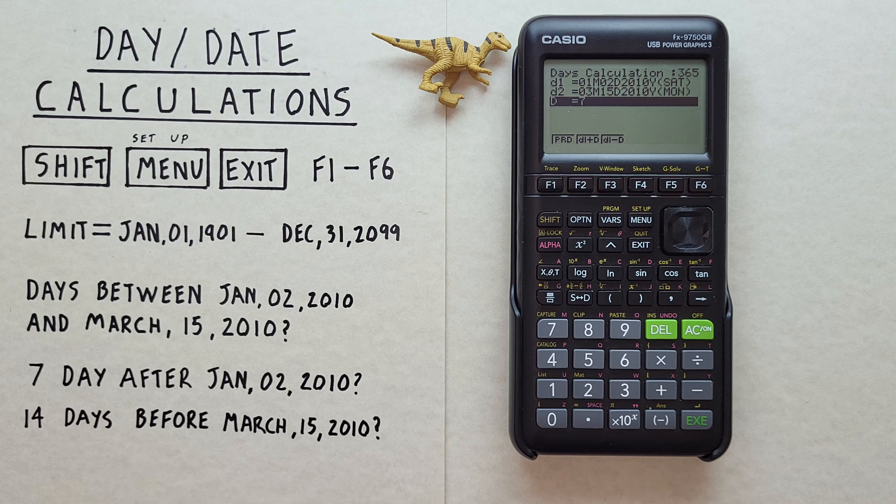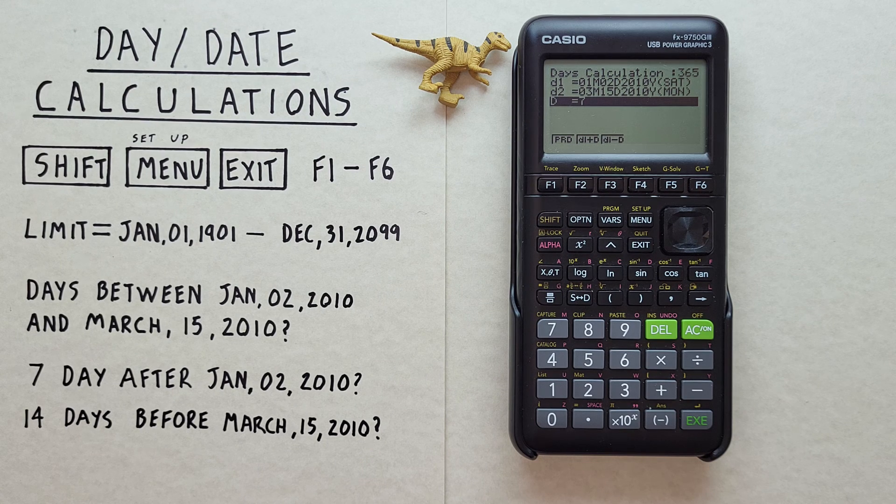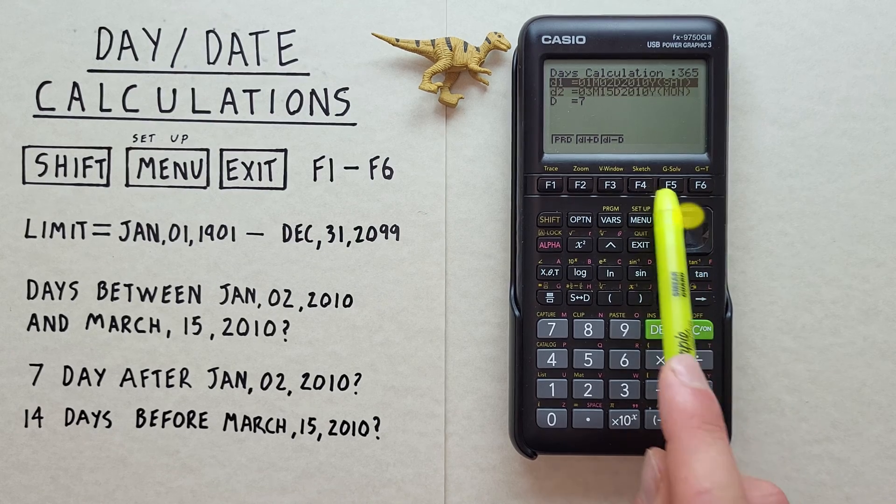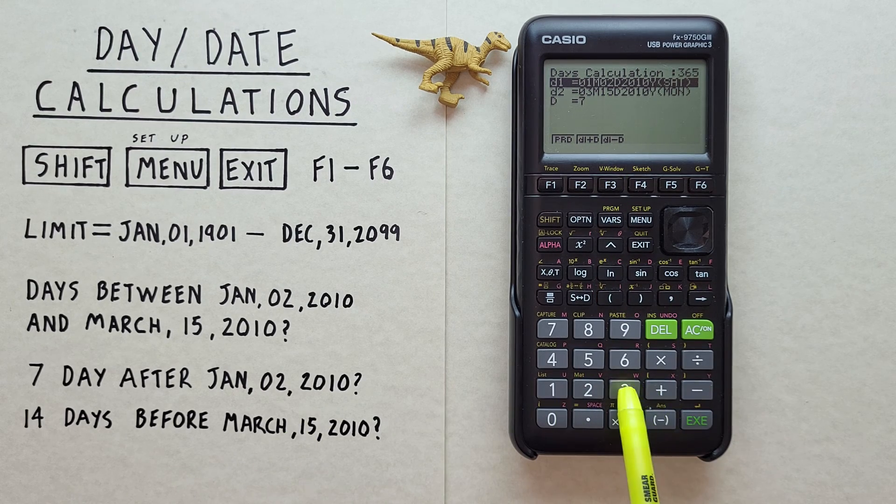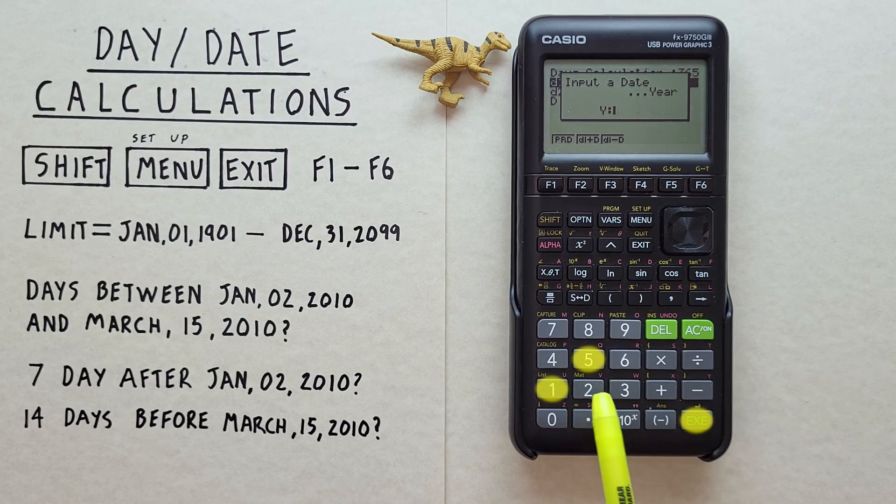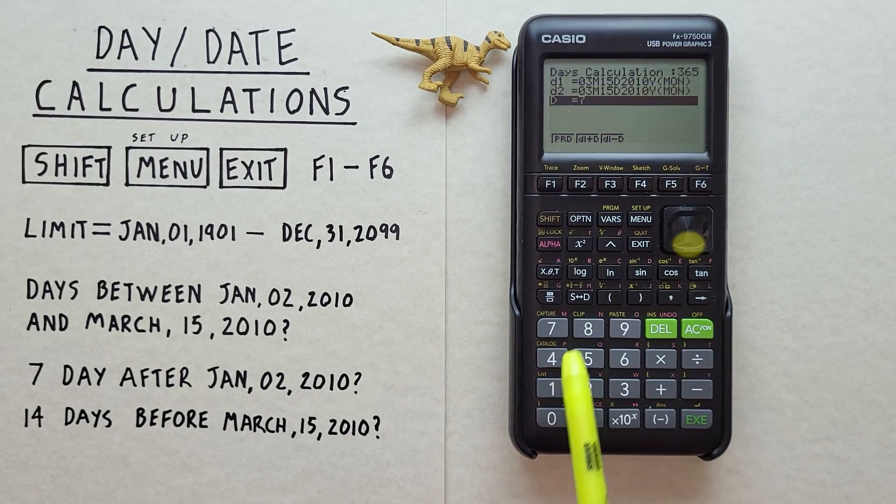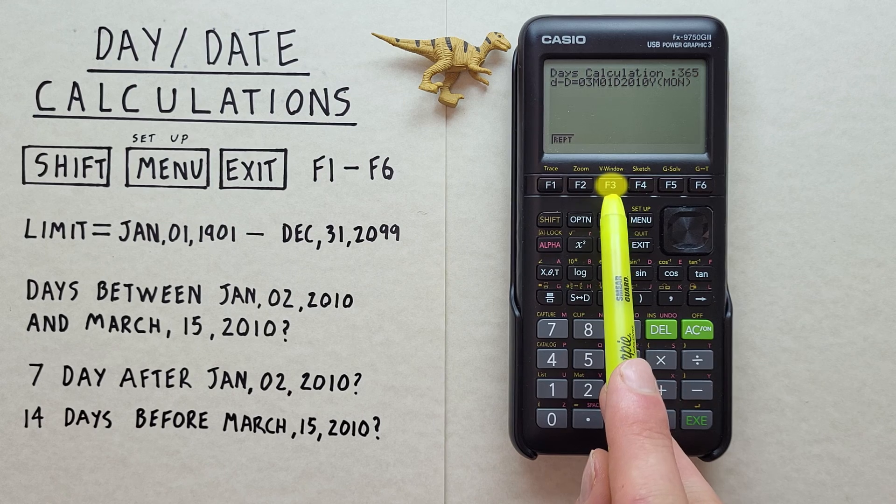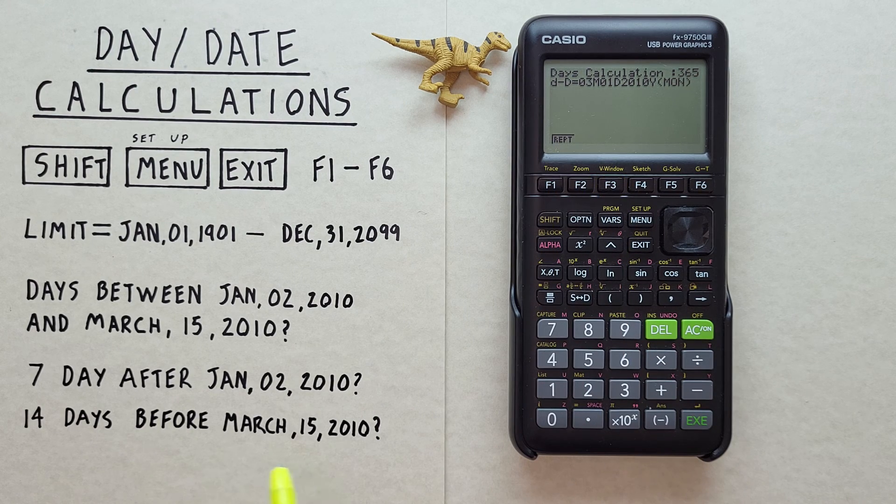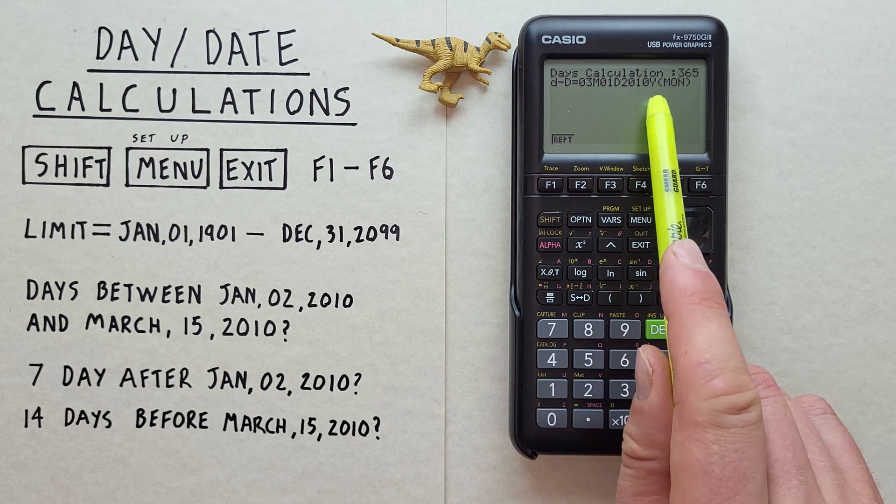We can also calculate days before a date. Like for example, we had another milestone that we wanted to have done 14 days before March 15. How can we determine that? Well, we need to first change our D1 because these only work off of D1. So we need to change D1 to our March 15 2010. And then our D to 14. And then we use D1 minus D to find that 14 days before March 15 is March 1 2010, which is a Monday. So that's when we need to have our other milestone complete.